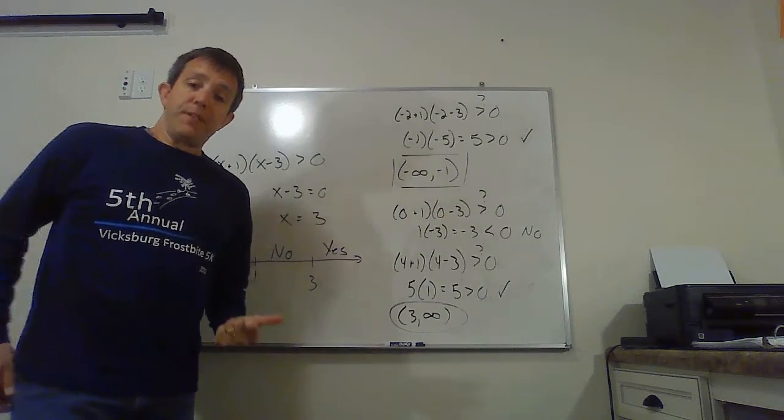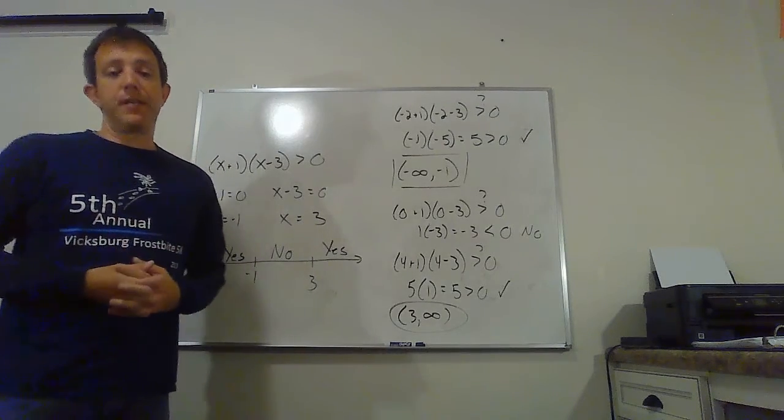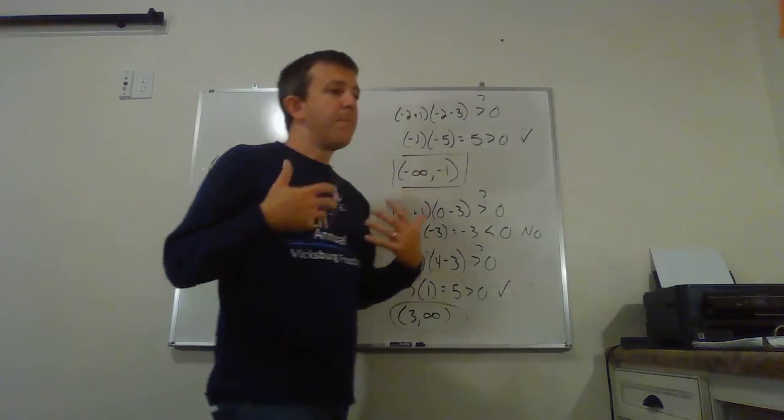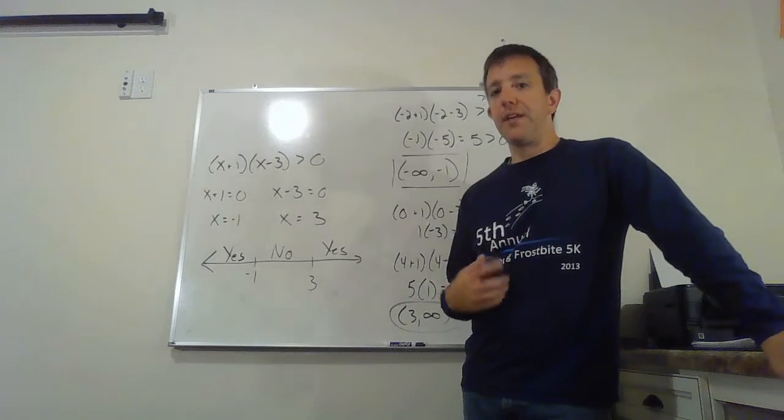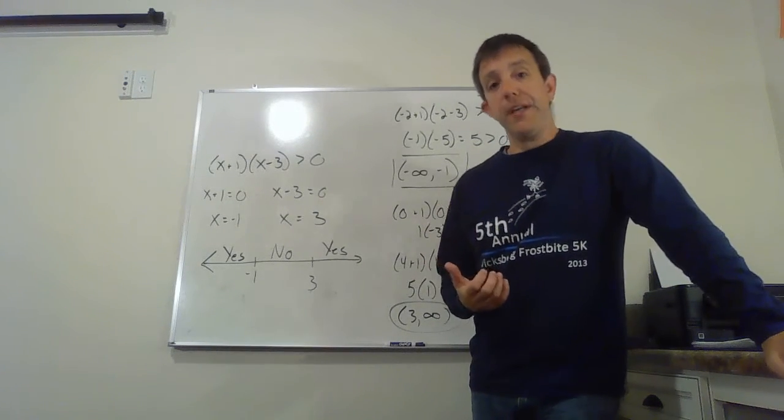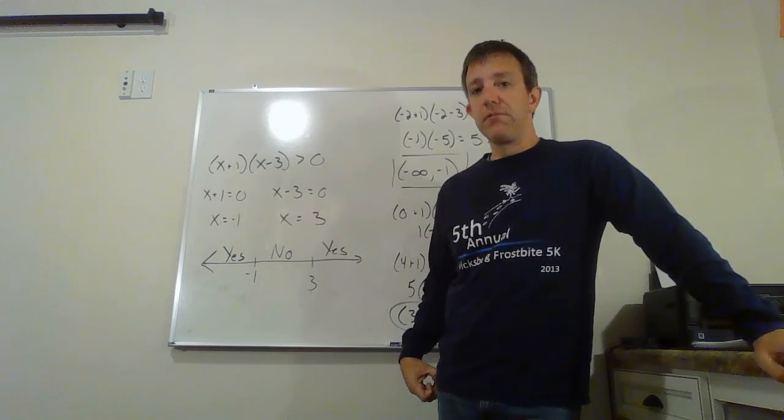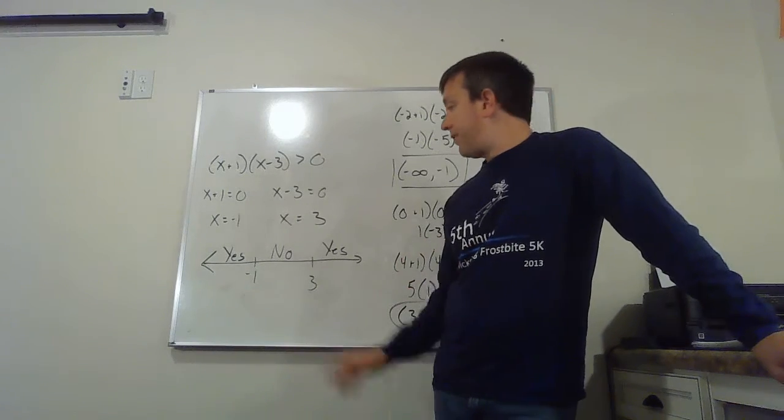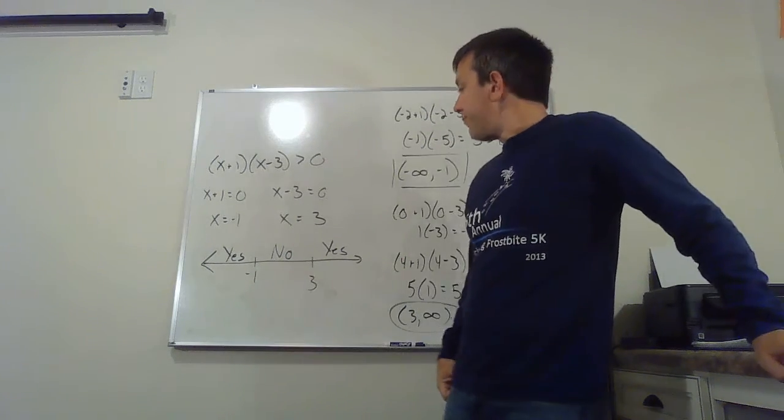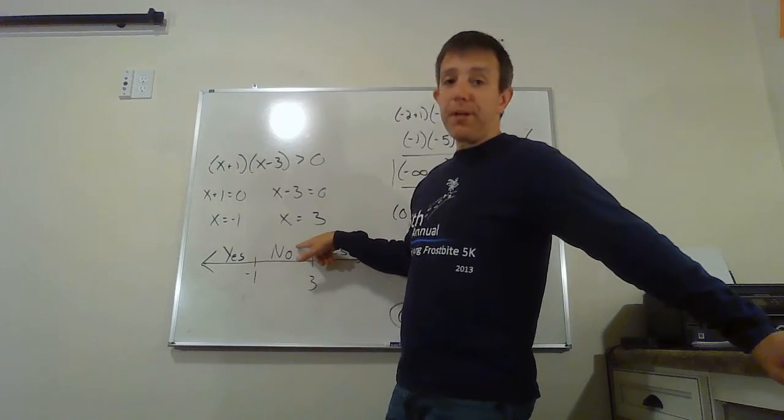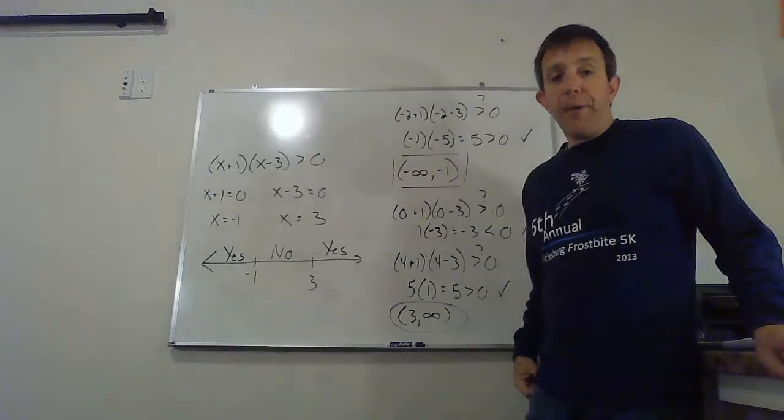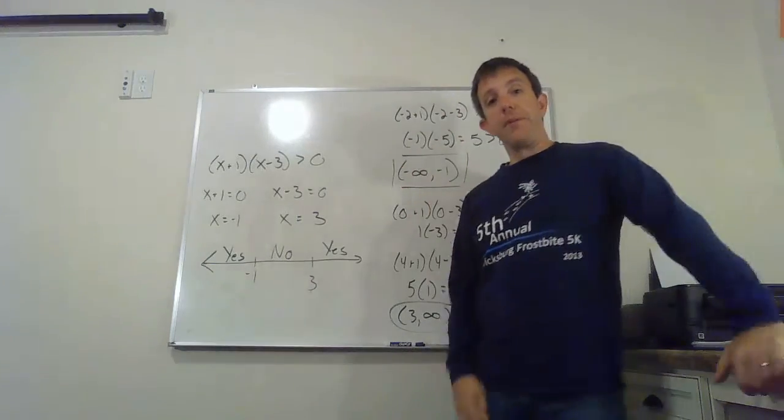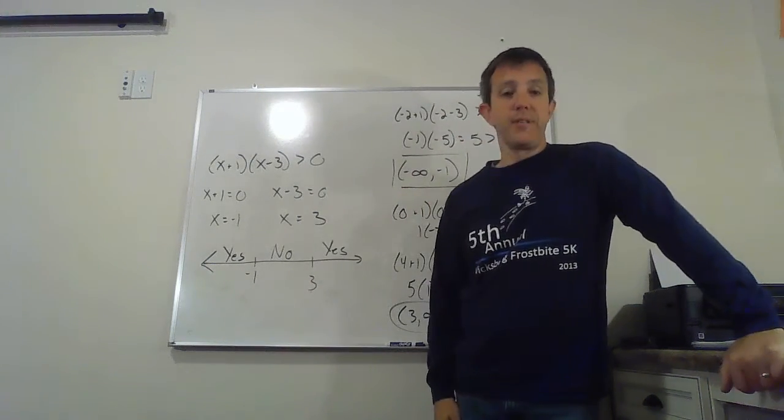A couple things of note here - notice that it goes from yes to no to yes. Most of the time, it's going to alternate. In a few rare instances, it won't alternate, so it's probably worth checking at least the intervals and see if you think they work. But it will usually alternate. If you have two zeros, it's almost always going to alternate. So once I figured out that first one, there was a high probability the next one was no, and the last one was yes. Now, there's nothing that says the first one has to be yes. This one could have gone no, yes, no, and we would just have one interval in the middle.